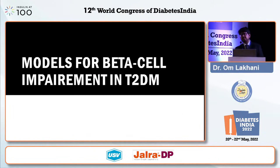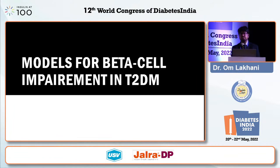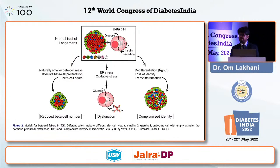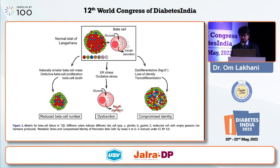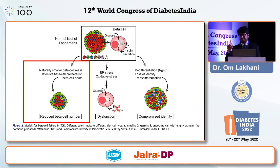Why does beta cell impairment occur in type 2 diabetes? What is the mechanism? There are three key models for beta cell impairment or dysfunction in patients with diabetes. The first is reduction in beta cell mass. The second is beta cell dysfunction. And the third and emerging concept is trans-differentiation of beta cells. Today's understanding of pathophysiology is tomorrow's treatment — that is what makes this really important.